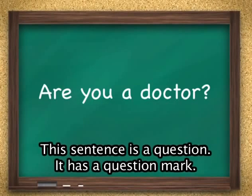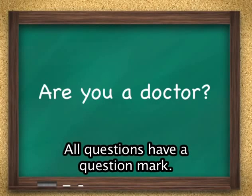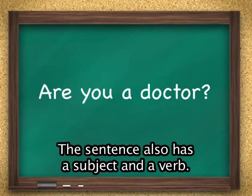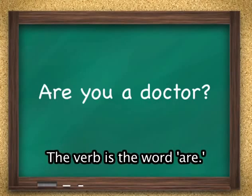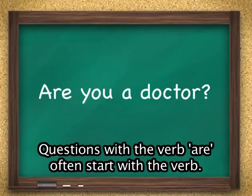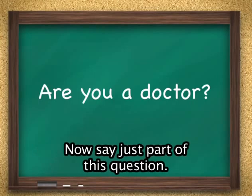This sentence is a question. It has a question mark. All questions have a question mark. The sentence also has a subject and a verb. This question starts with the verb. The verb is the word 'are'. Questions with the verb 'are' often start with the verb.